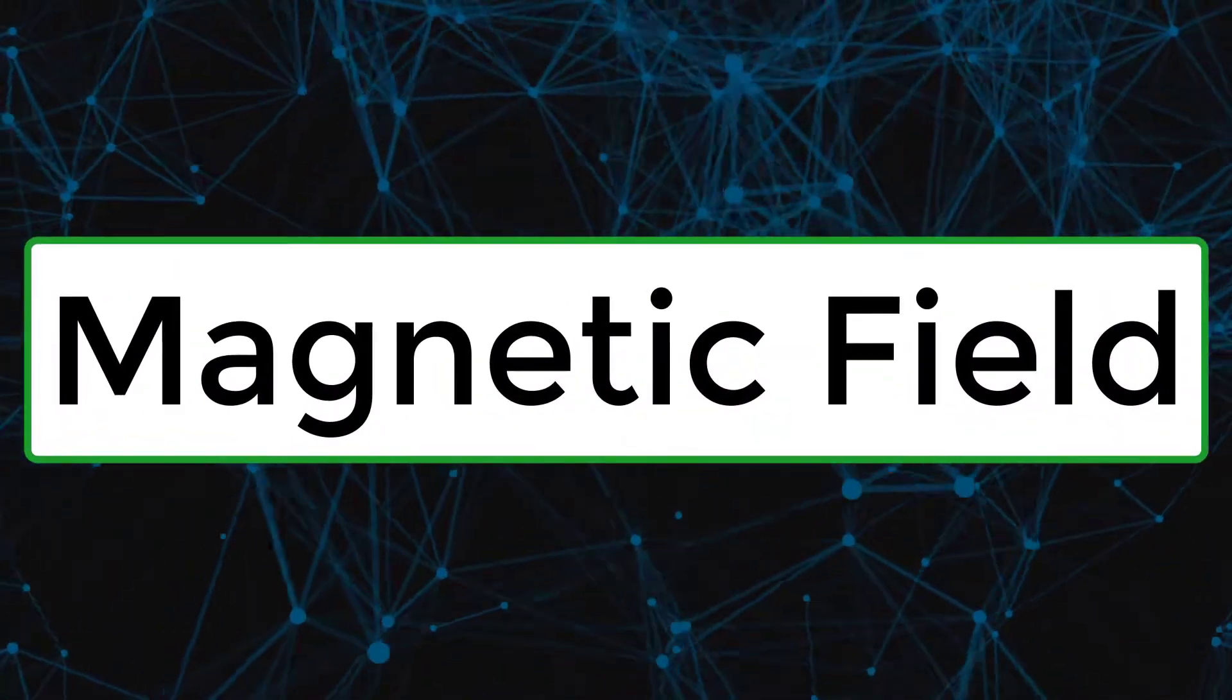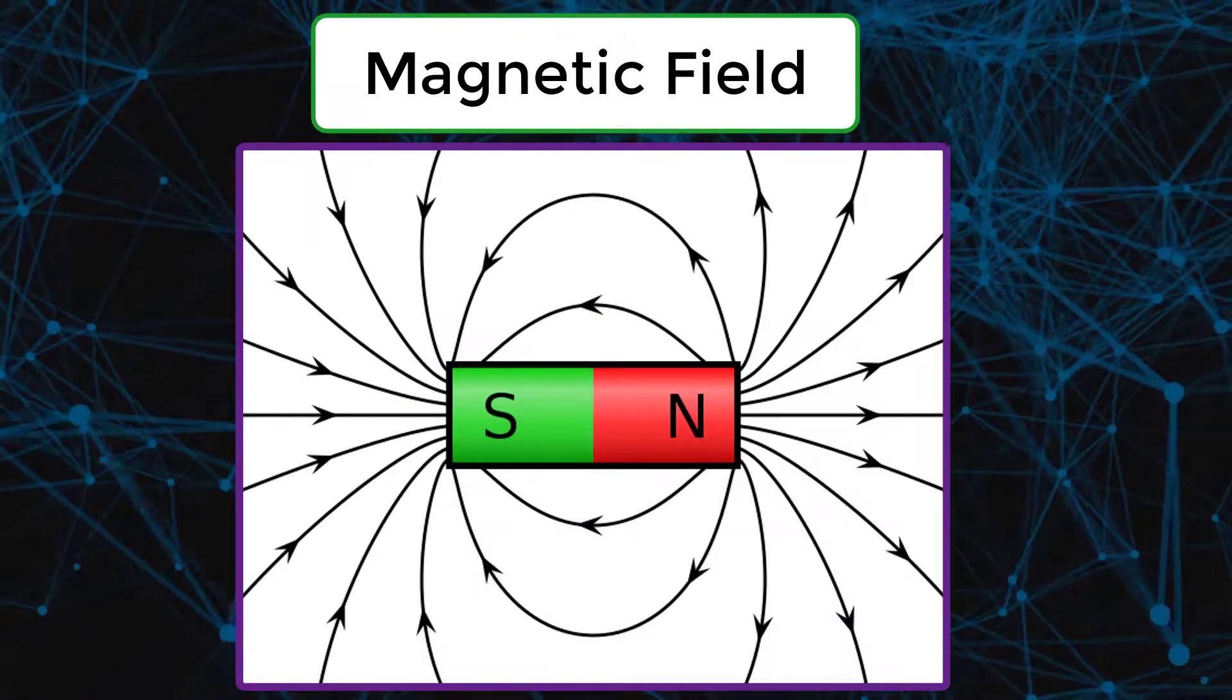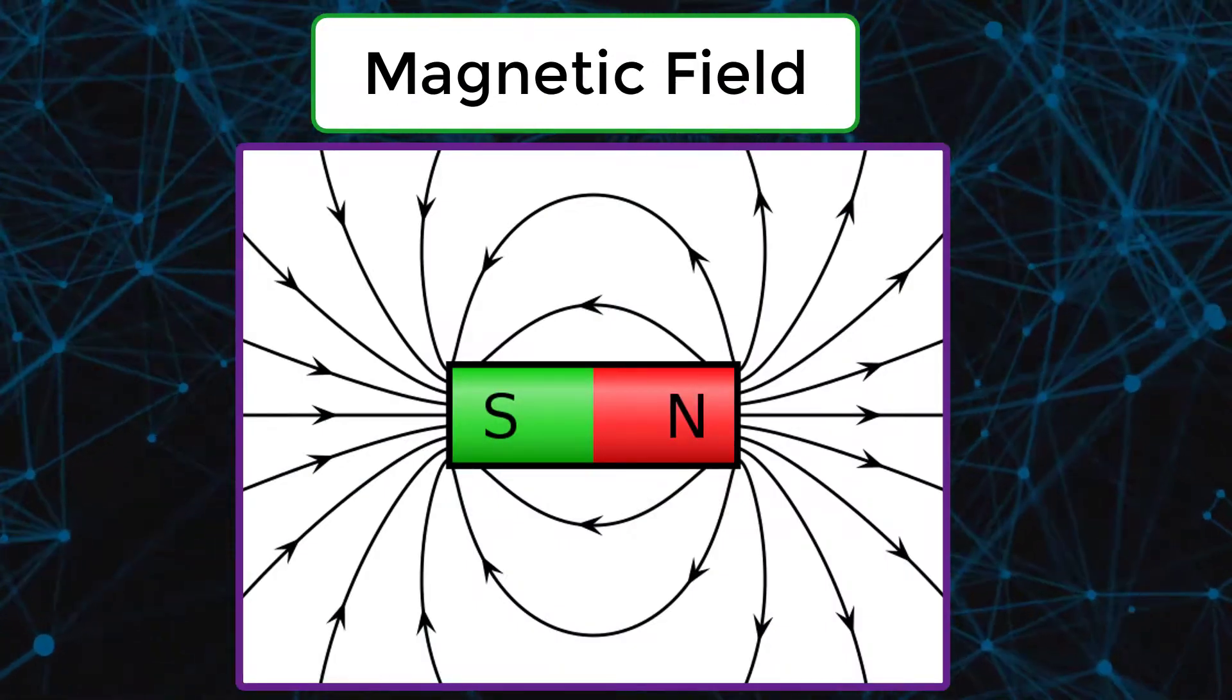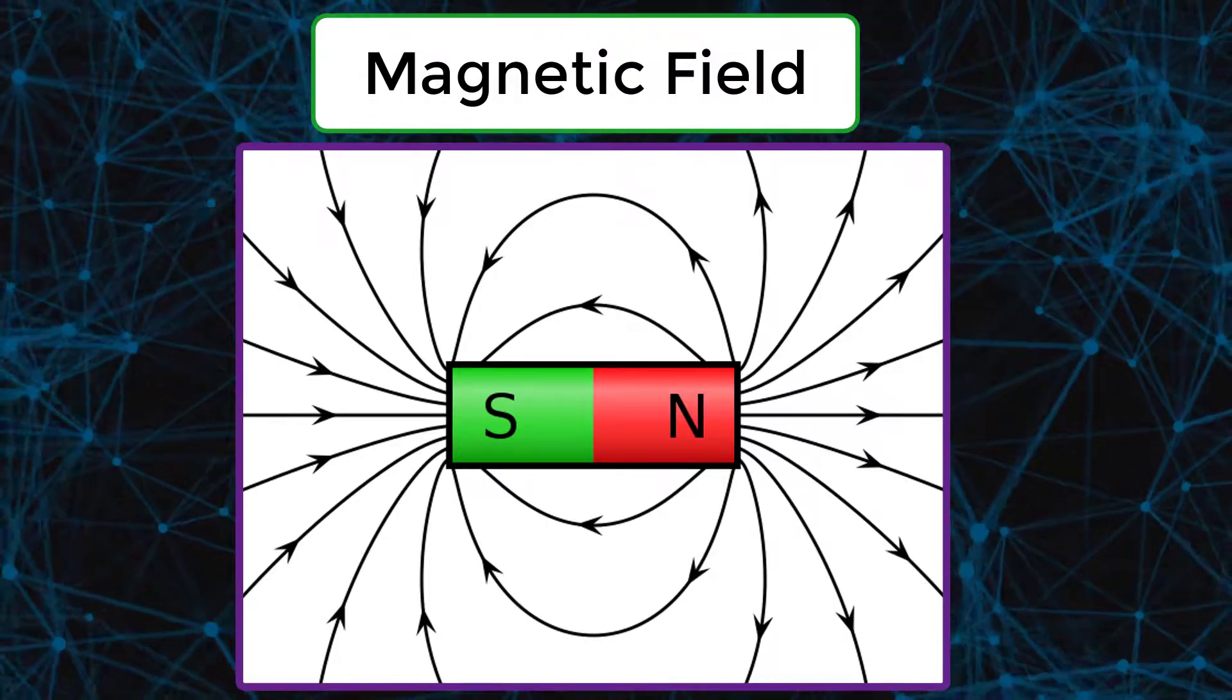Now let's look into magnetic field. A magnetic field is a vector field that describes the magnetic influence of electrical currents and magnetized materials.